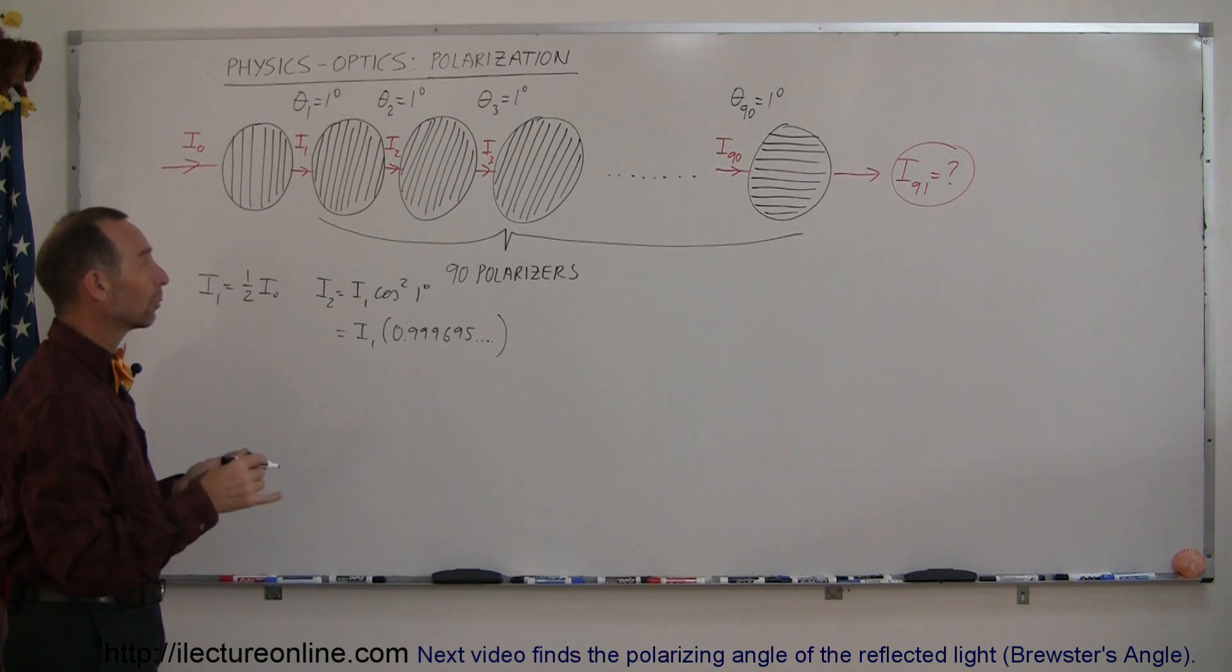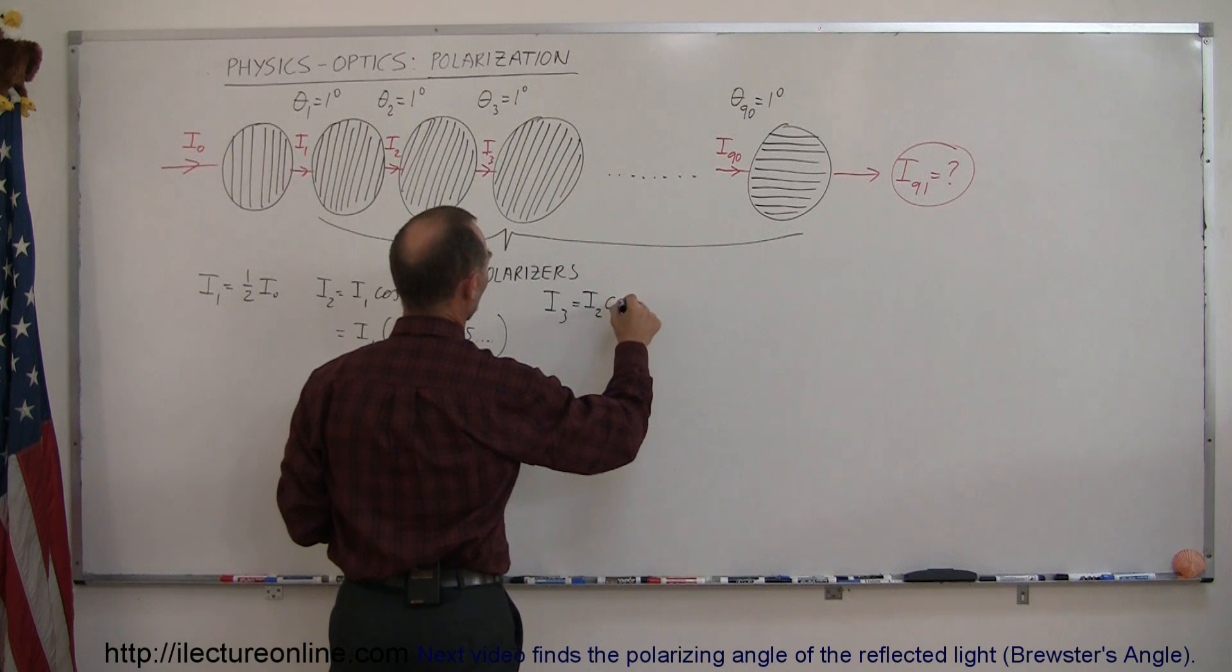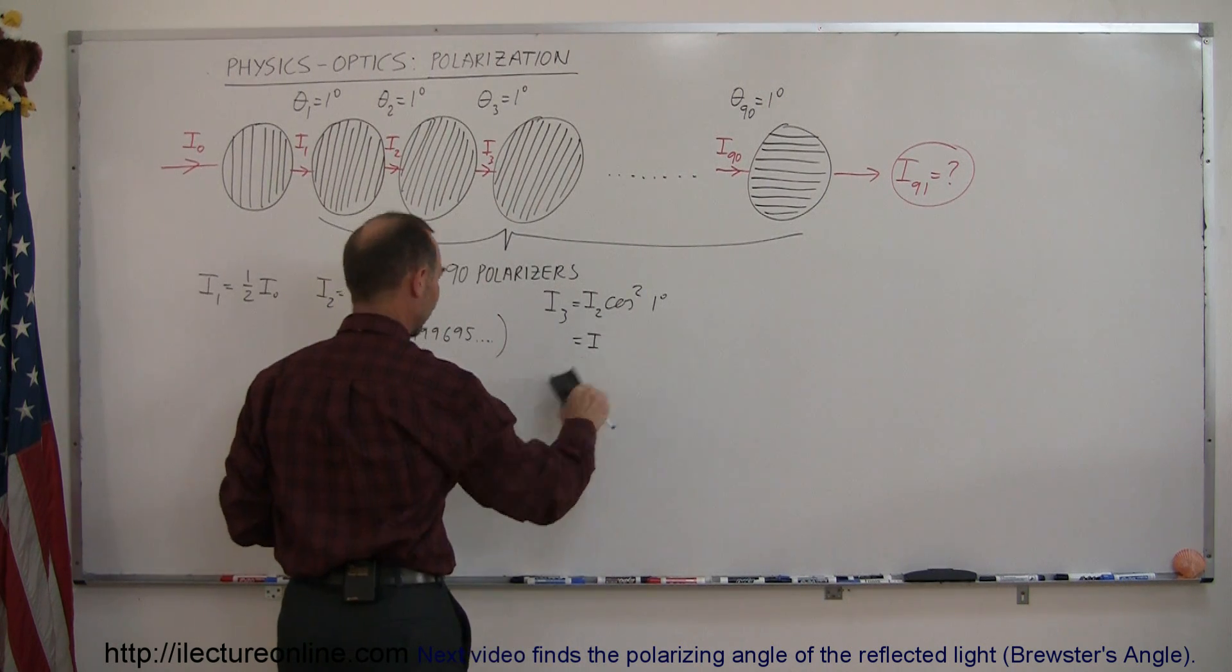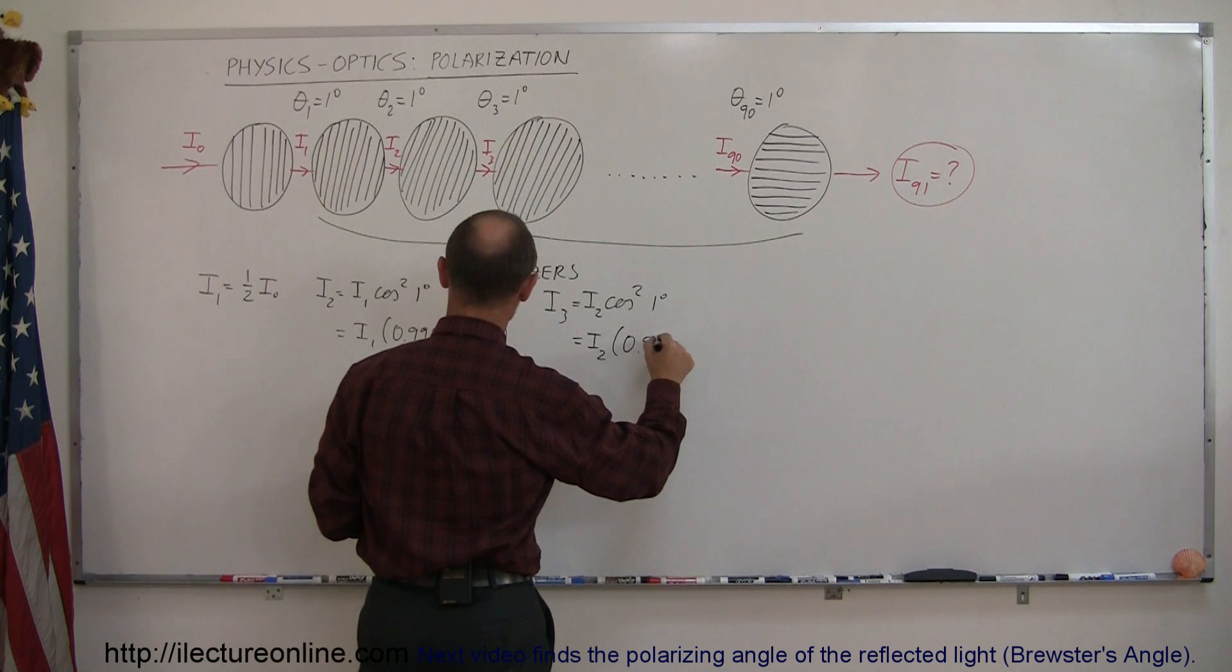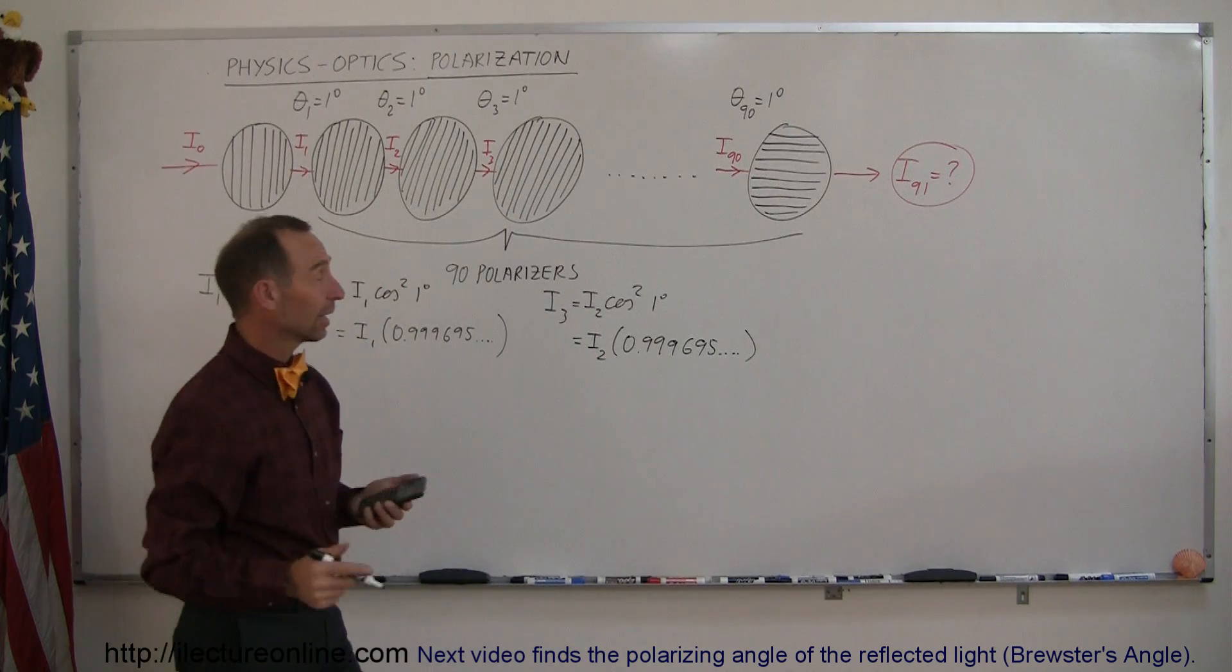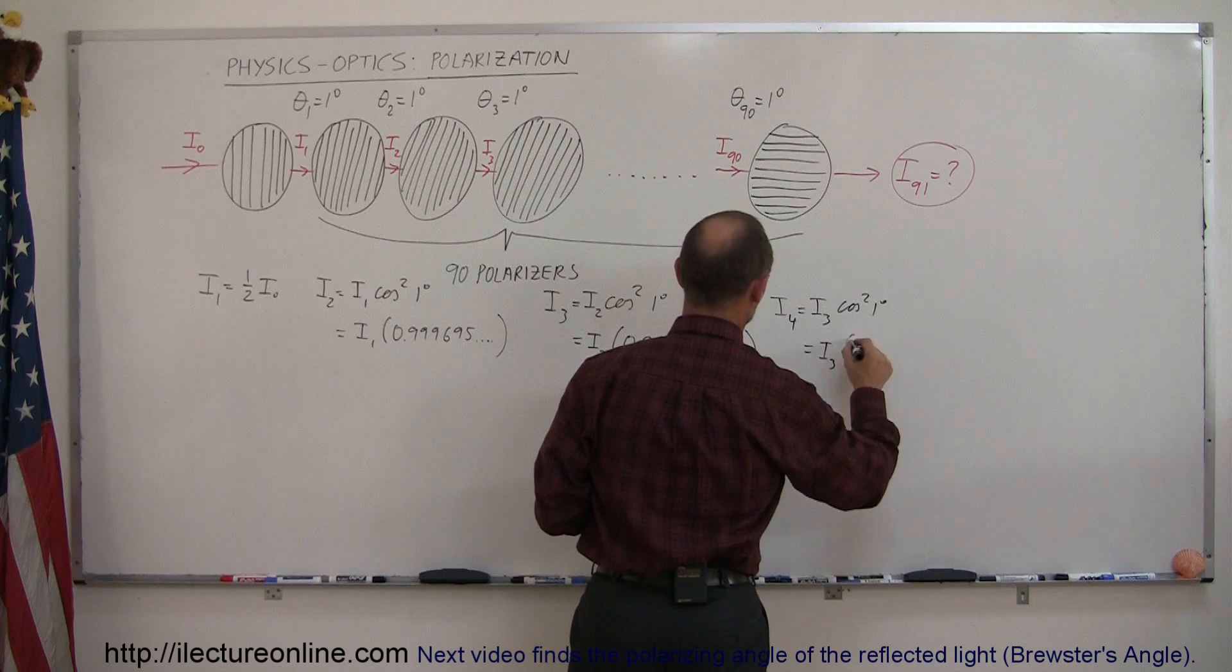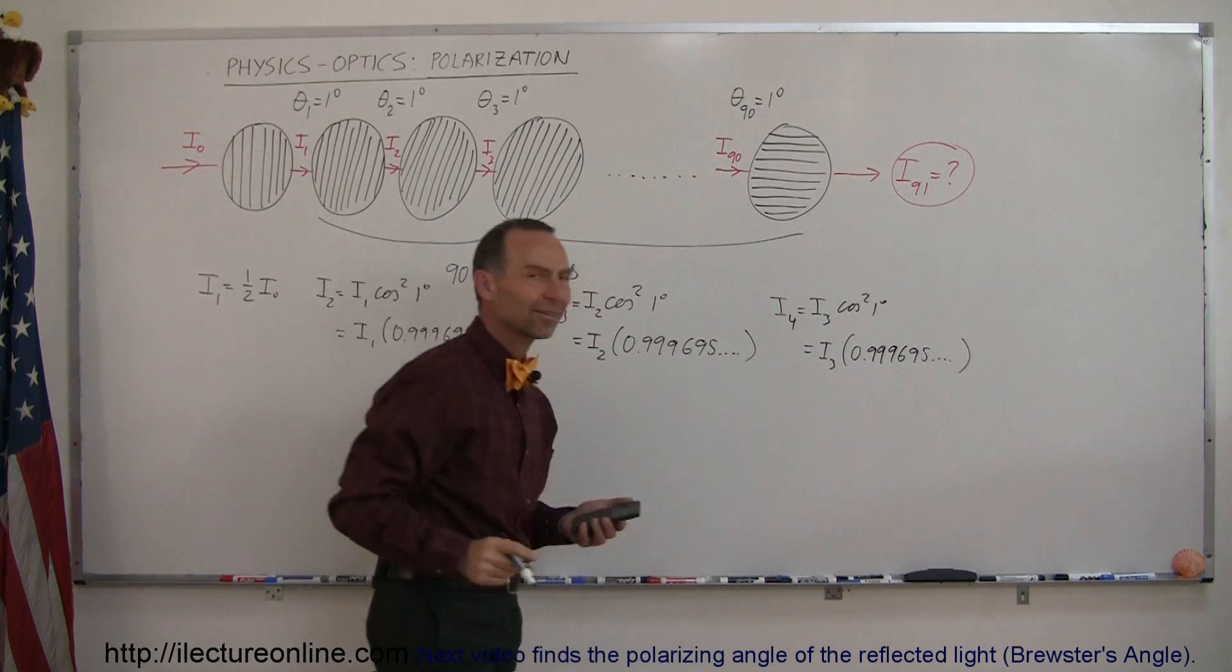And then of course we do it again with the second polarizer. We can then say that i sub 3 is equal to i sub 2 times the cosine squared of 1 degree. So that would be i sub 2 times 0.999695 and so forth. So i sub 4 is equal to i sub 3 times the cosine squared of 1 degree, which is equal to i sub 3 times 0.999695 and so forth. And I think you can see the picture here.